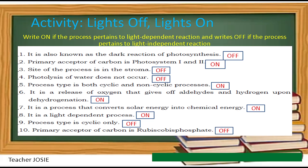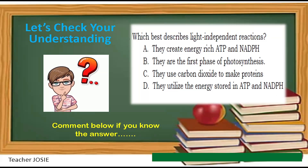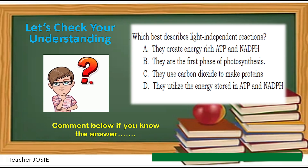Do you have the same answers? Good job! Let's check your understanding. Which best describes light-independent reactions? A. They create energy-rich ATP and NADPH. B. They are the first stage of photosynthesis. C. They use carbon dioxide to make proteins. D. They utilize the energy stored in ATP and NADPH. Comment below if you know the answer.